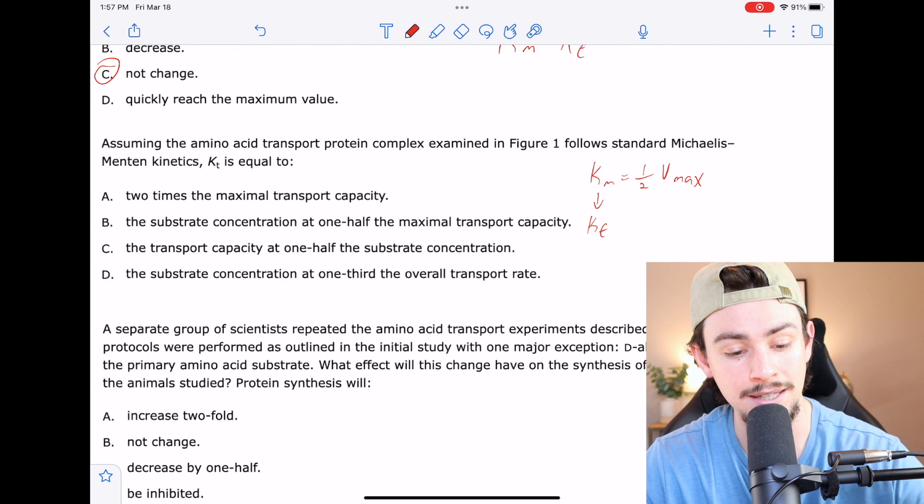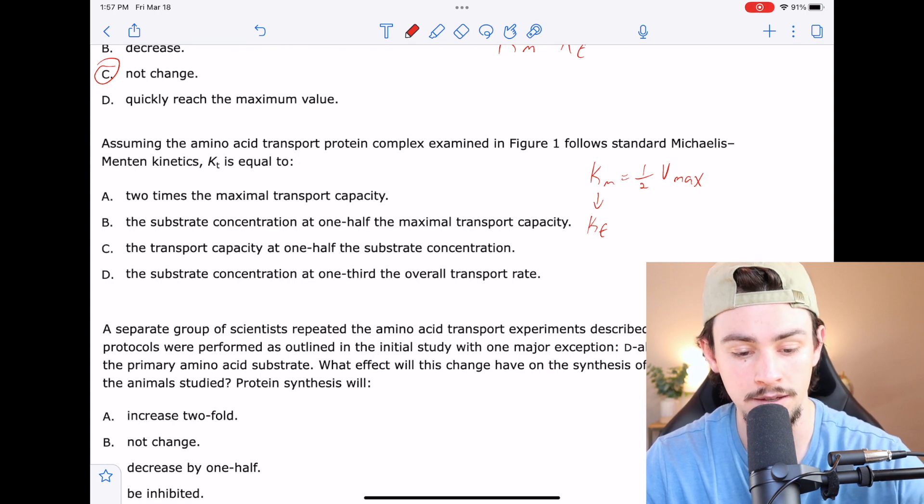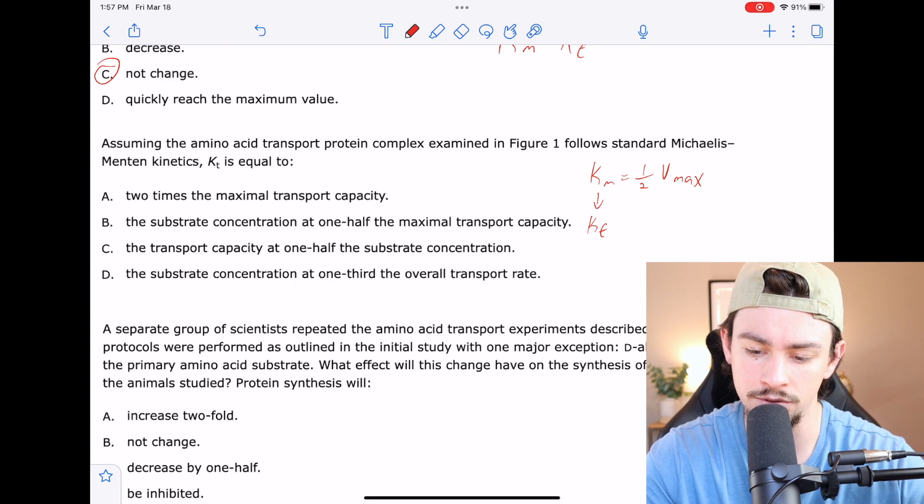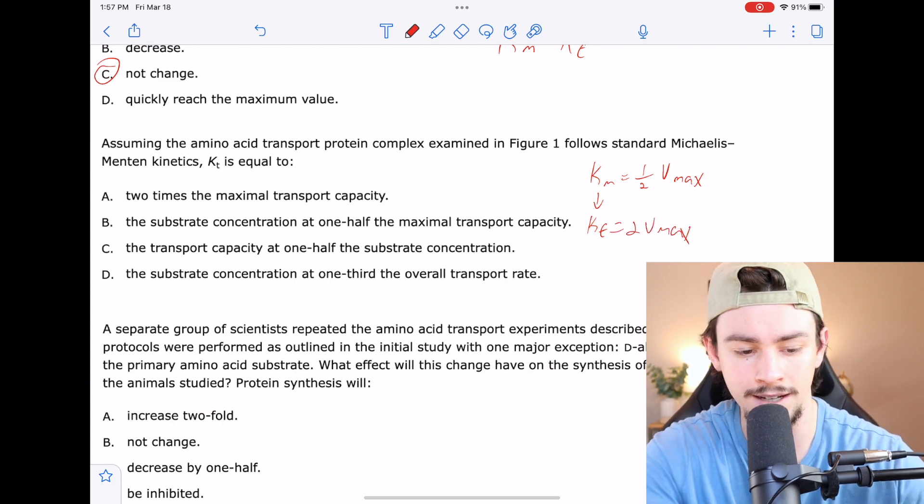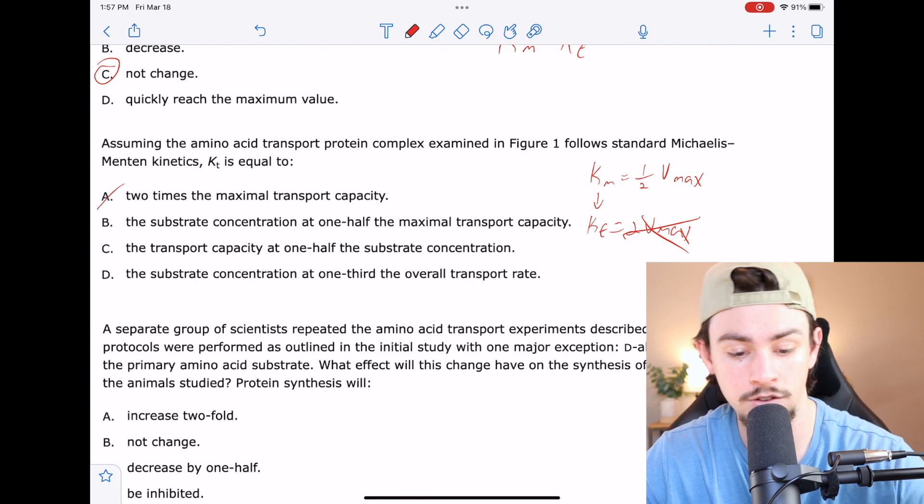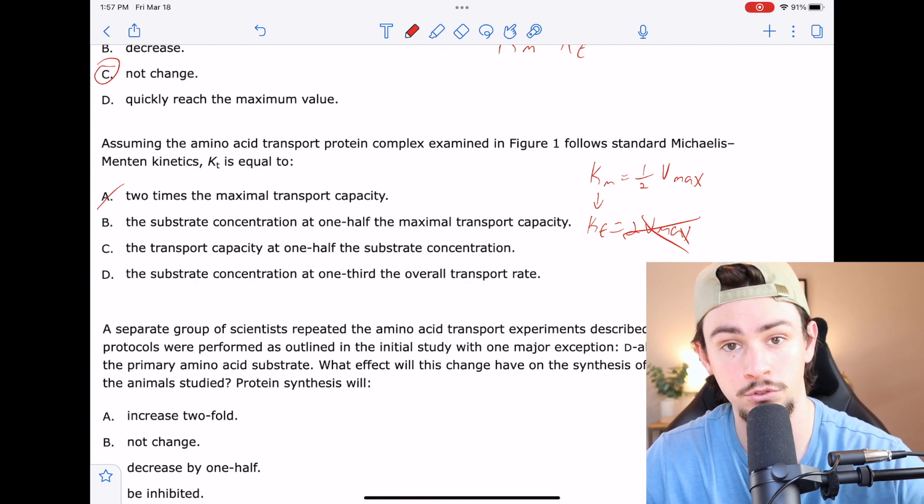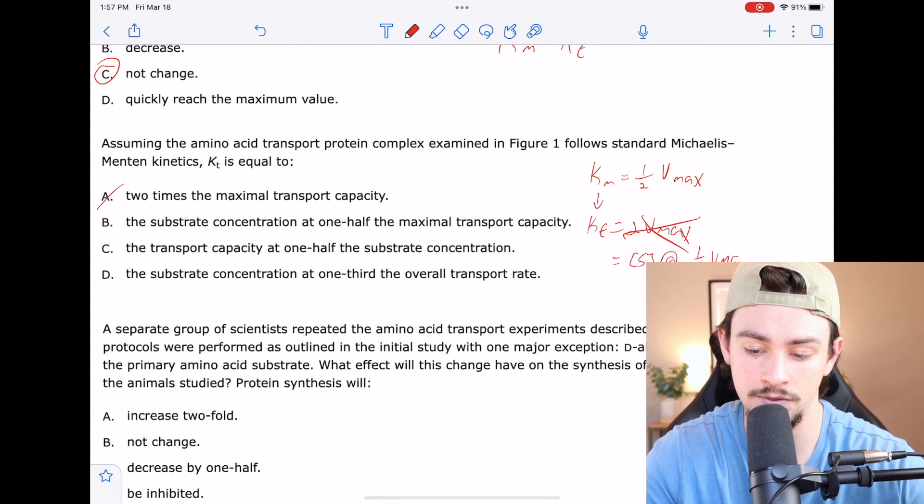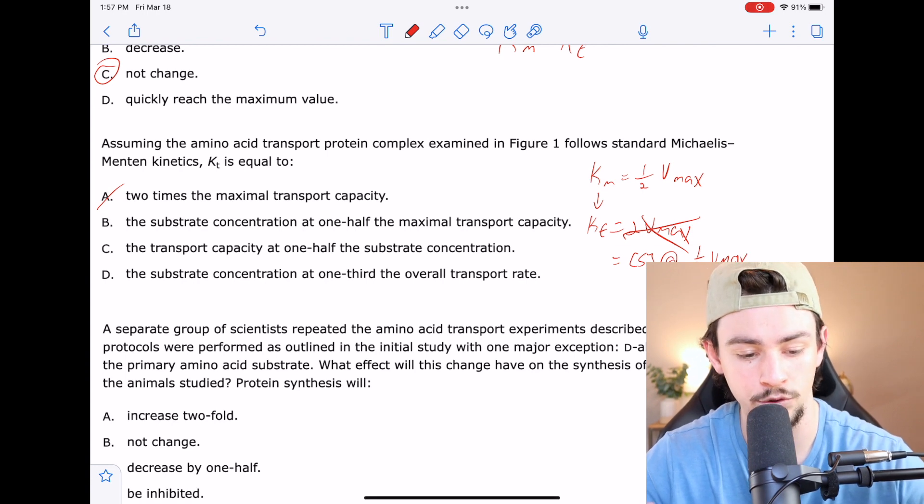A says KT will be equal to double the maximal transport capacity. No, that would mean KT is equal to two Vmax. So maybe not A. B says the substrate concentration at one half the maximal transport capacity. Yeah, that's perfect because that is substrate concentration at one half of Vmax. That's exactly what KM is. So I like B.